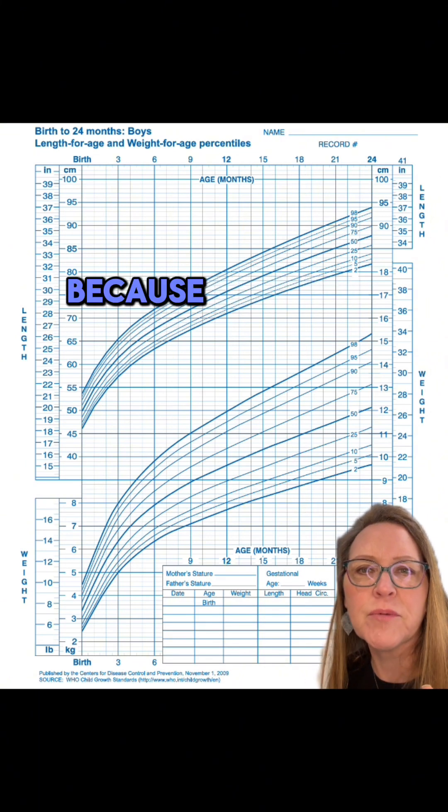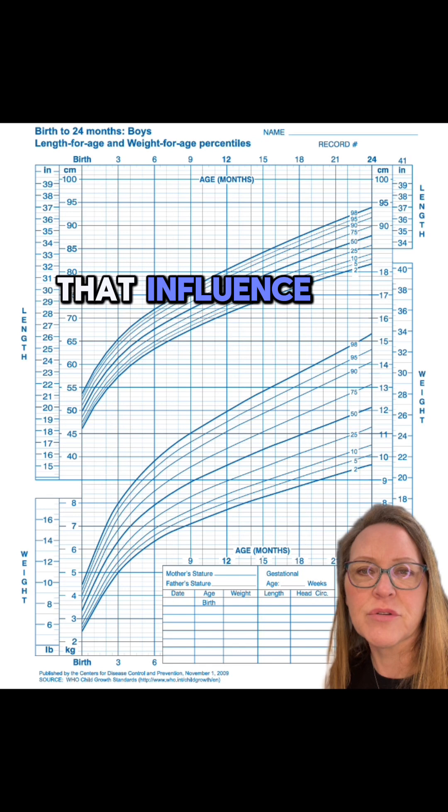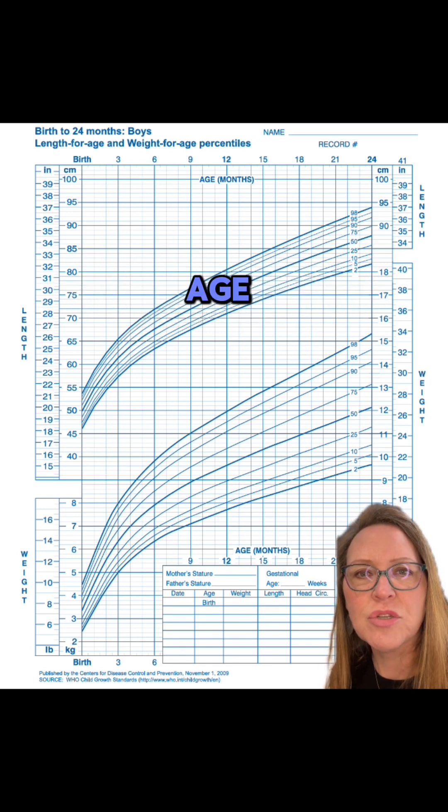This is completely fine because the birth percentile often reflects the in utero environment, such as high blood pressure, diabetes, or other factors that influence the baby's growth before delivery. We typically start tracking percentiles at two weeks of age.